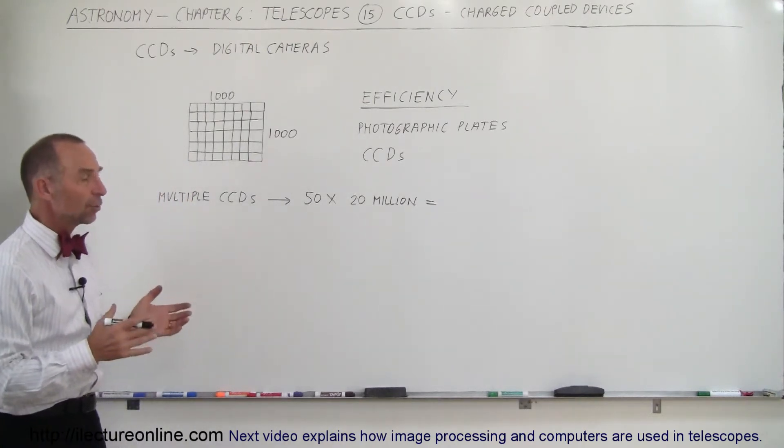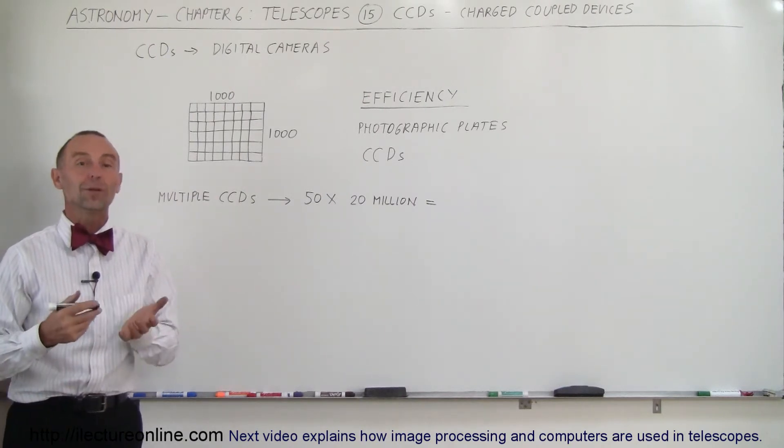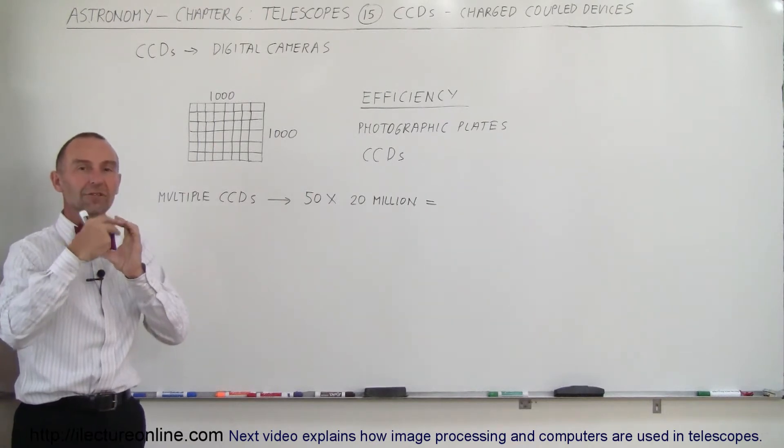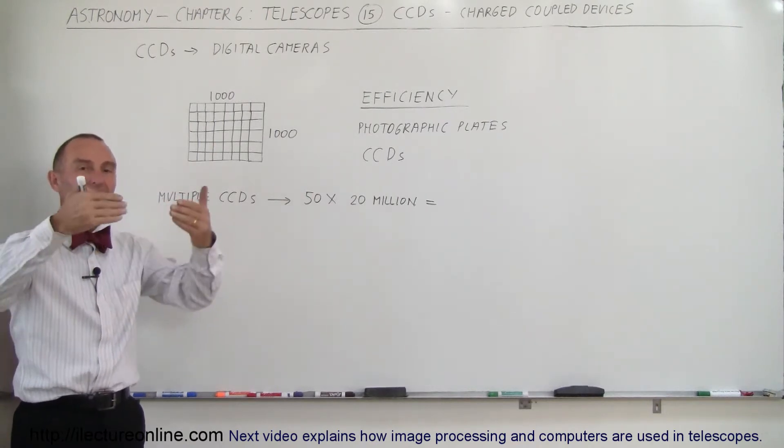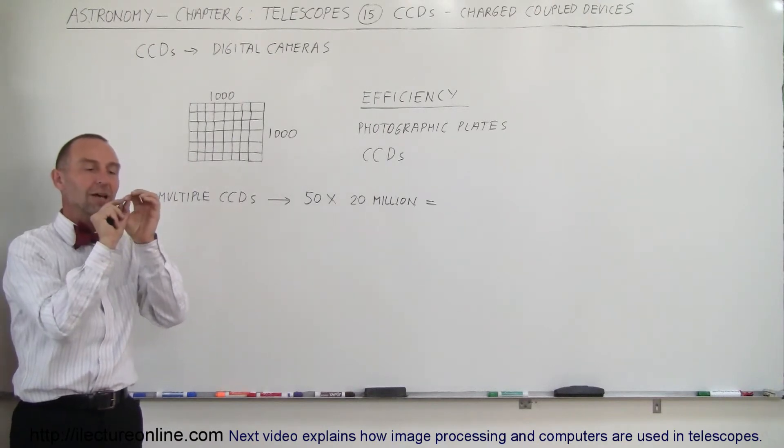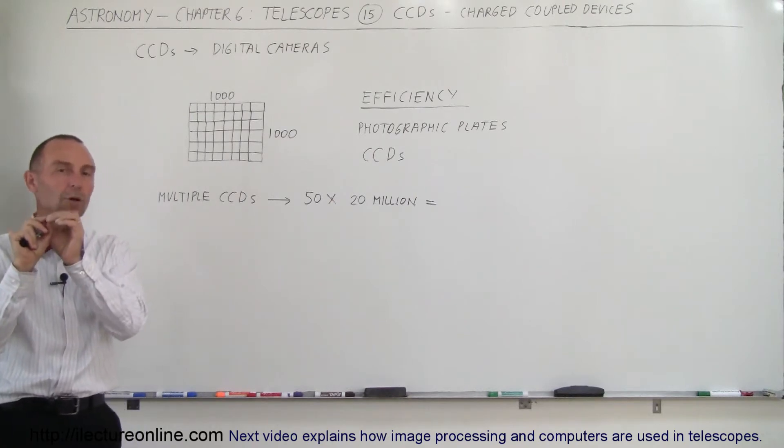What are CCDs? Well, most people that have cell phones or digital cameras are already using one. It's simply the electronics that is able to capture a sensitive image by having light shine on a computer chip that allows the light to be collected on single individual small pixels.